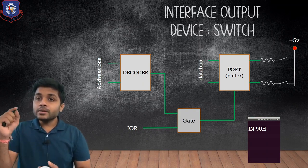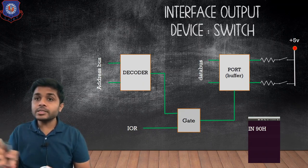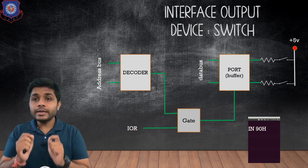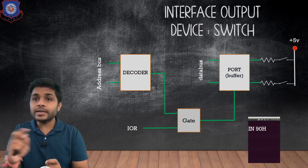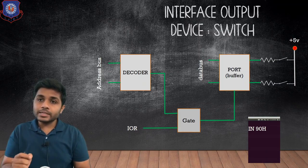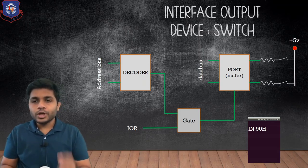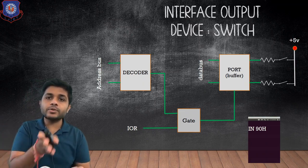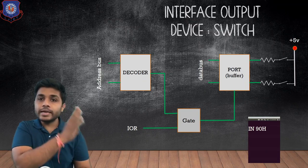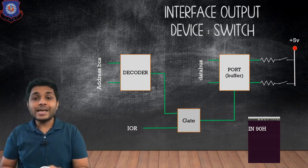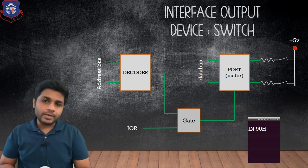Depending on the status of the switch, we are continuously receiving data. In this case we are not required to use latch, because latch is only needed when data is received for just a fraction of time and then it is gone. Here we are receiving continuous data, so using a latch is totally unnecessary. We use the buffer — the buffer passes the data to the data bus, which transfers it to the microprocessor accumulator. This is the reason why we use latch as output port and buffer as input port.